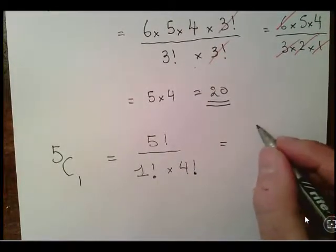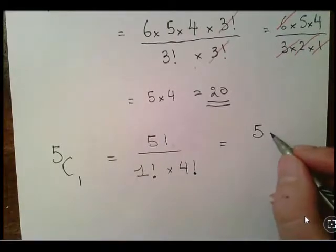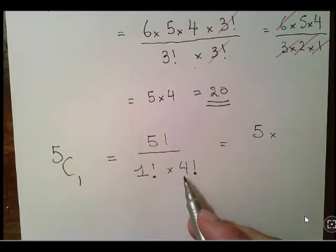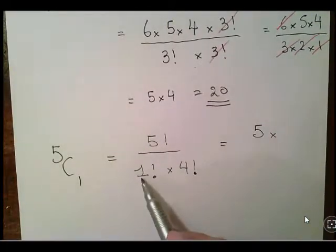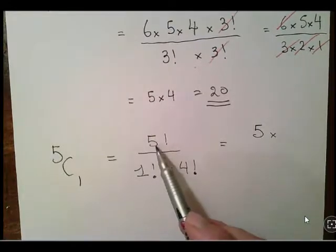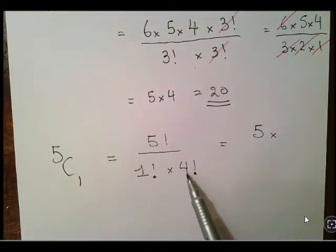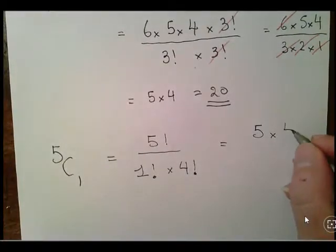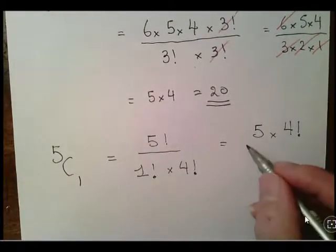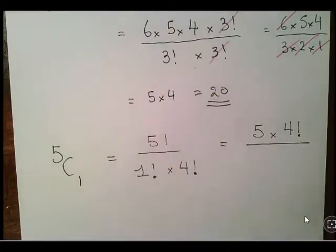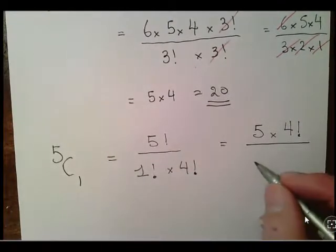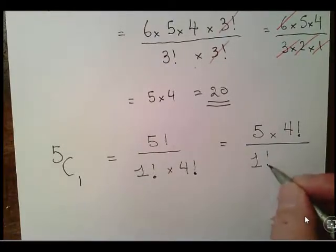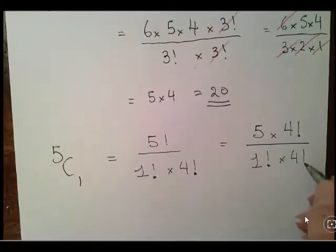Just to be clear, k here is equal to 1, n is equal to 5, n minus k is equal 5 minus 1, which is equal to 4. What I'm going to do there is let 5 factorial equal to 5 times 4 factorial.